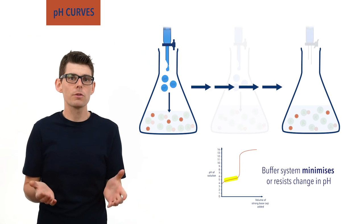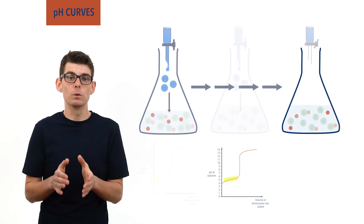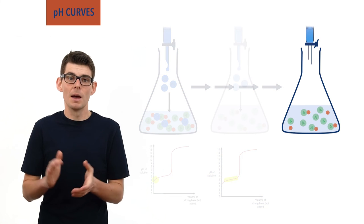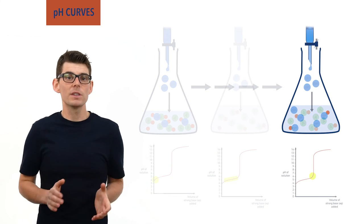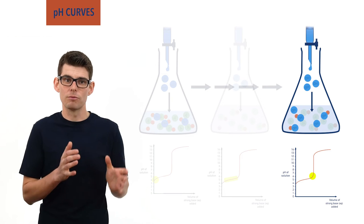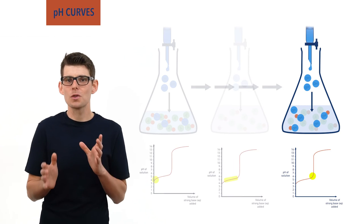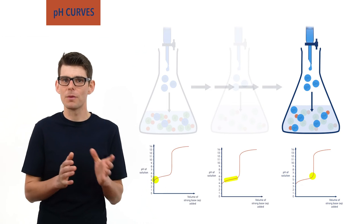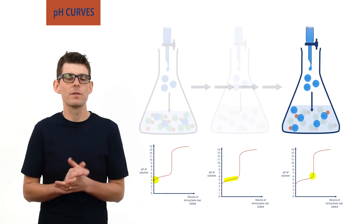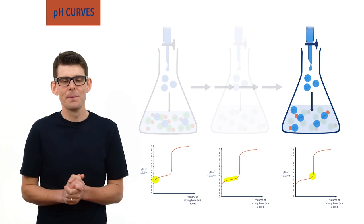Eventually, the concentration of HA starts to fall too low for the equilibrium system to cope, and this is when the pH starts to increase rapidly again. If you're at all unsure about how the buffer is working here, please check the video on buffers — the link is in the description below.